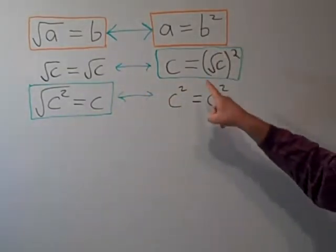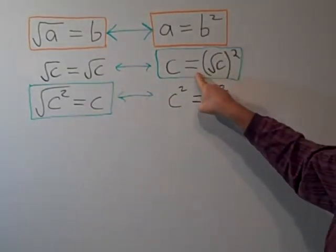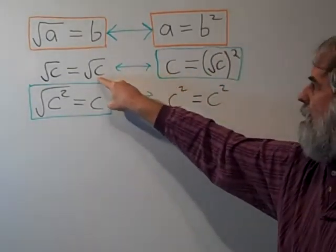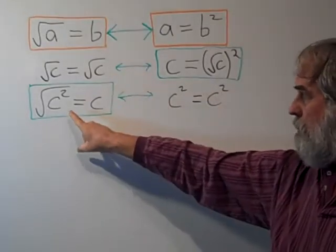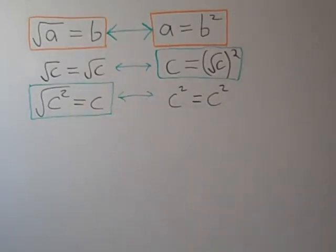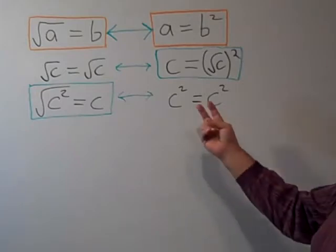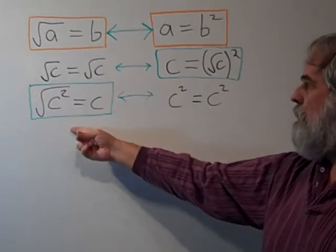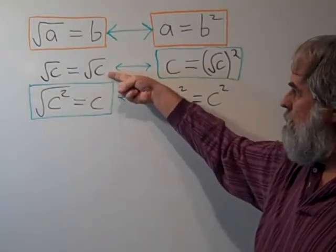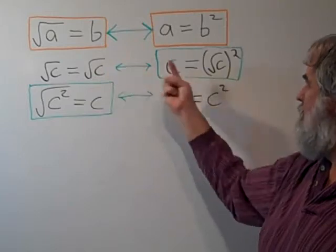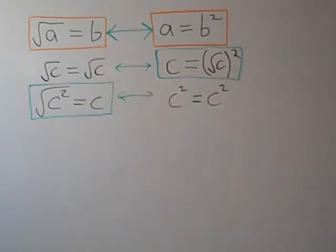With practice this will become as obvious as that, and this will become as obvious as that. They're both equivalent: if this is true, this must be true, just as if this is true, this must be true. So those are some of the interesting properties.